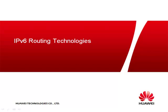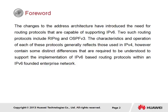We now take a look at IPv6 routing technologies in order to provide inter-network communication within IPv6 networks. The changes to the address architecture have introduced the need for routing protocols capable of supporting IPv6. Two such routing protocols include RIP-NG and OSPF v3. The characteristics and operation of each generally reflect those used in IPv4, however contain some distinct differences required to support implementation within an IPv6-founded enterprise network.